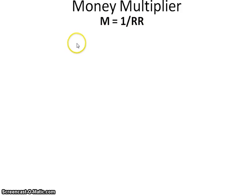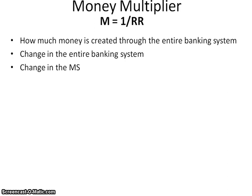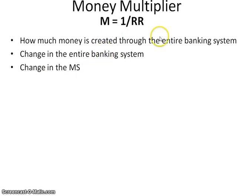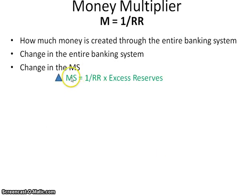With the money multiplier formula being 1 over the reserve requirement, one way questions can be asked is how much money is created through the entire banking system, or equivalently, what is the change in the money supply. For these questions, the formula you use is 1 over the reserve requirement times the excess reserves, because the excess reserves are what get loaned out.